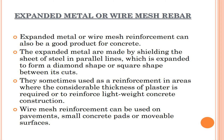Expanded metal or wire mesh rebar can also be a good product for concrete. The expanded metal is made by shearing sheets of steel in parallel lines, which are expanded to form a diamond shape or square shape between the cuts. They are sometimes used as reinforcement in areas where a considerable thickness of plaster is required, or to reinforce lightweight concrete construction. Wire mesh reinforcement can be used on pavements, small concrete pads, or movable surfaces.